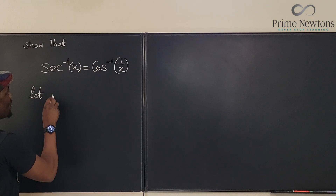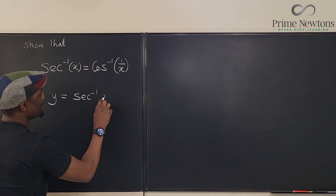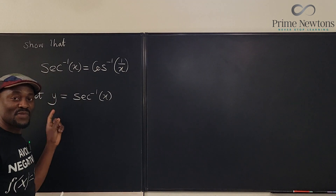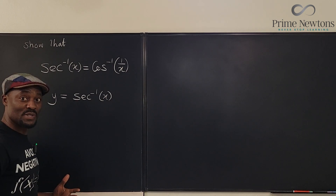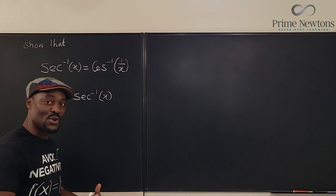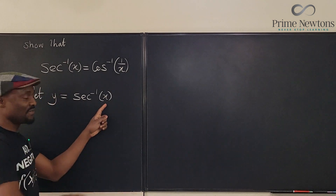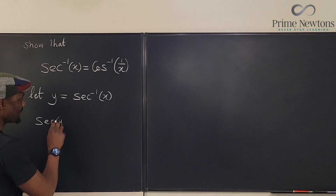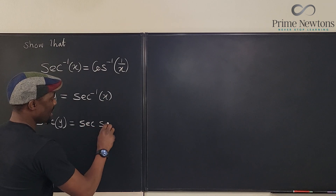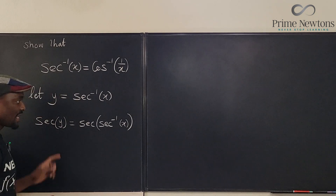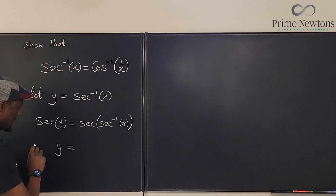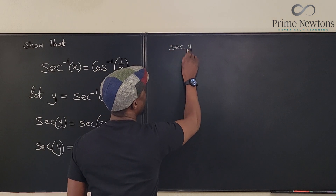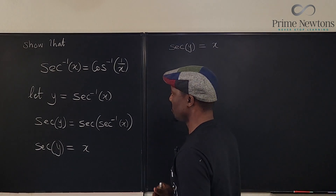I'm going to start from this side. I'm going to say: let Y be equal to the inverse secant of X. So now X is bound and Y is free. We're going to reverse the process — free X but lock it up at the end, then go free Y again, and that's when we get our answer. So how do we free X? We take the secant of both sides to undo this. So secant of Y equals the secant of inverse secant of X, which releases X — so secant Y equals X.